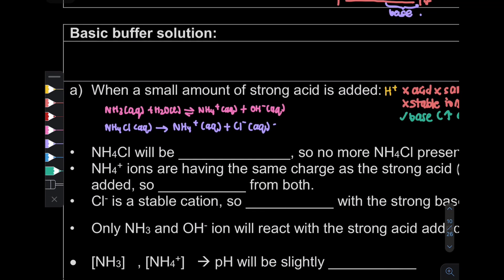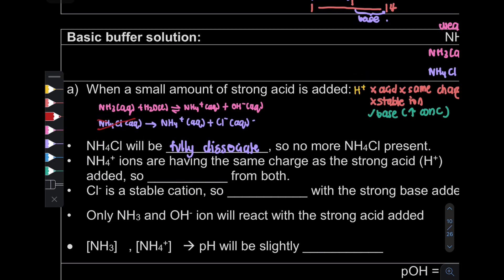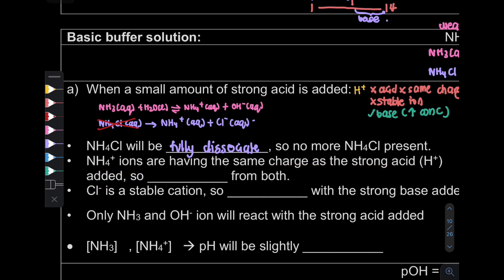The NH4Cl, which is a strong conjugate acid, will fully dissociate. Since NH4Cl is an acid, H+ will not react with acid, so I'm going to cancel out NH4Cl. Also, NH4+ ions have the same charge as the strong acid added, so we cancel that too. H+ does not want to react with NH4+ — no reaction from both.